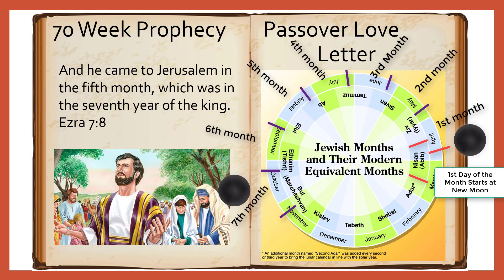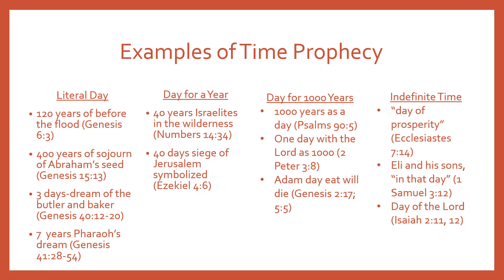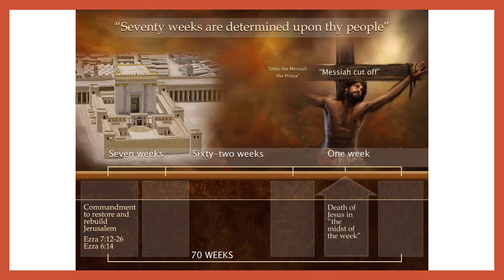Now let's see what happens if we plug in our symbols. The four symbols we saw for time were: literal, a day for a year, a day for a thousand years, or an unknown time. We know that the indefinite time doesn't work because the prophecy tells us the time — 70 weeks. Let's see if the day for a thousand years works.